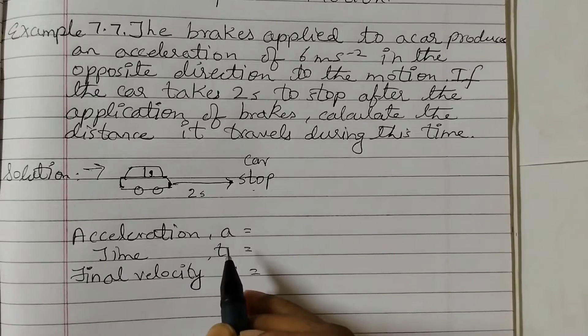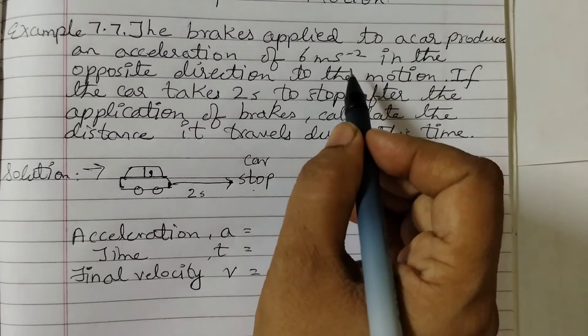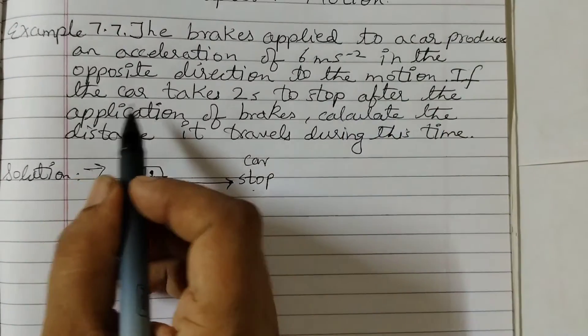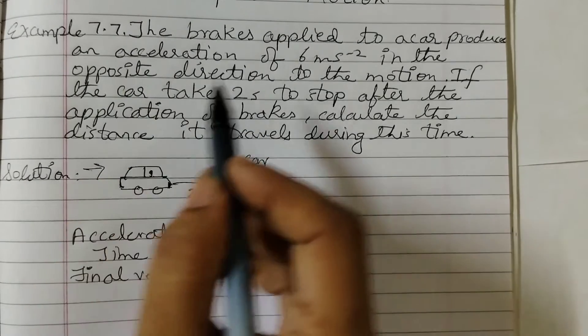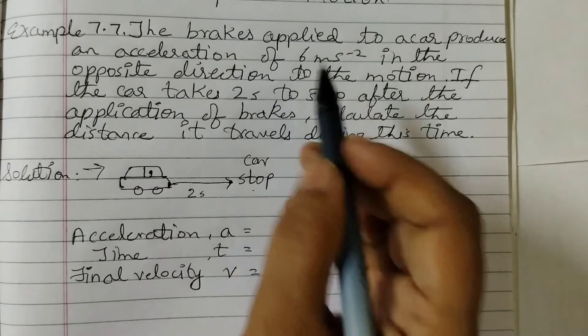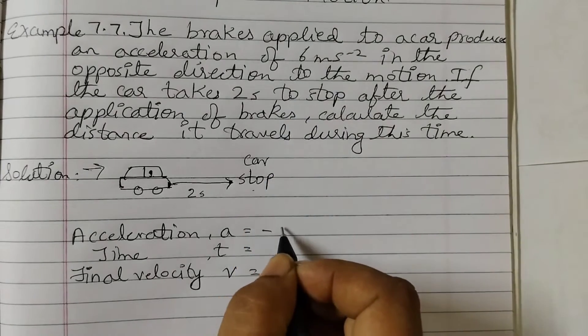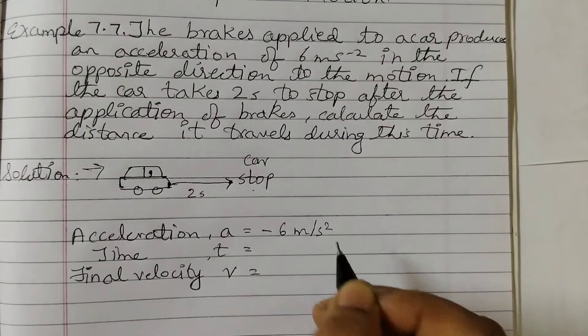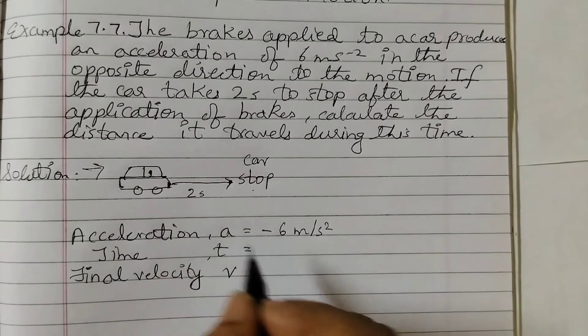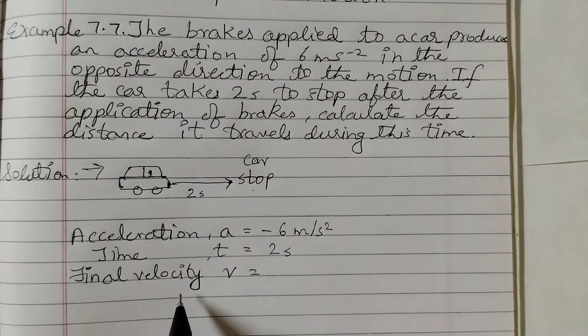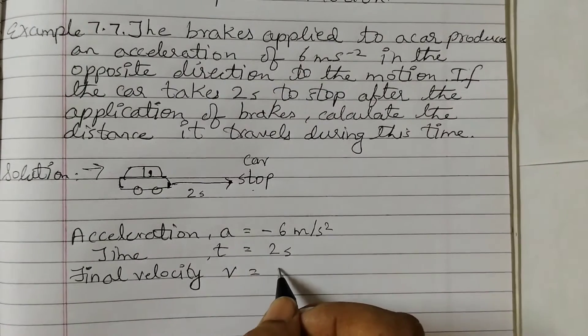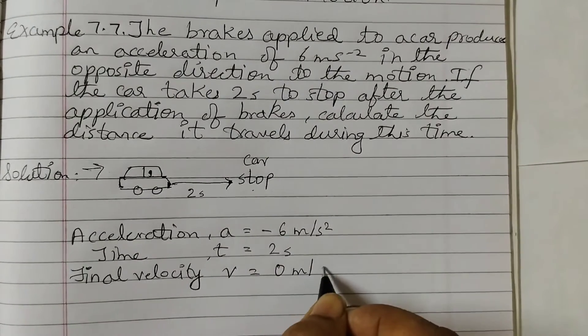Here the acceleration a is given as 6 meters per second squared in the opposite direction. So whenever there is an opposite word that means it will be minus that number, so minus 6 meters per second squared. Time is 2 seconds, and the final velocity, because the car comes to stop, will be 0 meters per second.